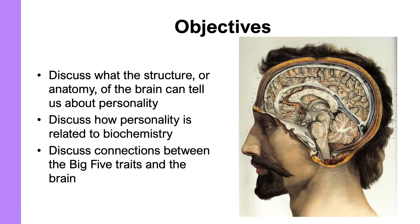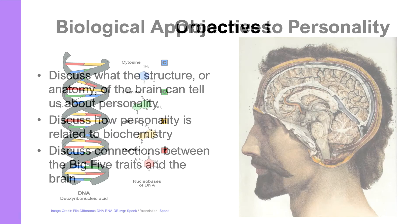So neurotransmitters, hormones, and then last, we'll talk about the connections between all of these things — structure, anatomy, neurochemistry — and the Big Five. How are differences in our physiology related to differences in our behavior that is measured by the Big Five traits?